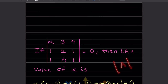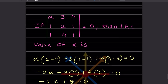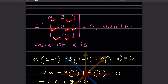When we write a matrix, we use square brackets. Now here is the first problem: if the determinant of the matrix with entries alpha, 3, 4, 1, 2, 1, 1, 4, 1 equals zero, then we have to find the value of alpha.